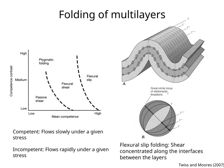If the mean competence is high, and the competence contrast is high to low, flexural slip folding will predominate. In this case, we have thick competent layers separated by thin incompetent layers. There is shear concentrated along the thin incompetent layers between the competent layers.